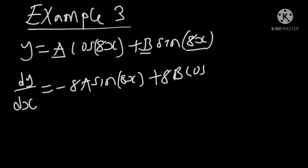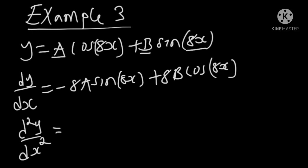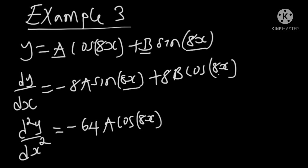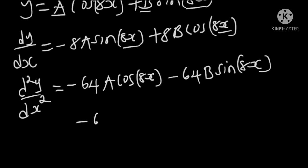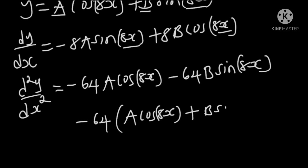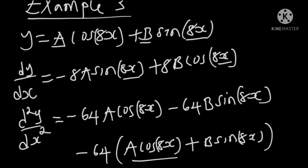For the second derivative, d squared y over dx squared equals: when we differentiate sine, we get cosine; we also differentiate the angle and get 8. So 8 times 8 gives 64. When we differentiate cosine, we get negative sine; again differentiating the angle gives 8, so 8 times 8 gives 64. Factoring out negative 64: if you compare this component with the original equation, it is the same. Therefore, we can replace it with y.